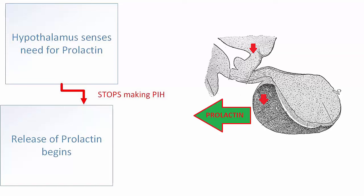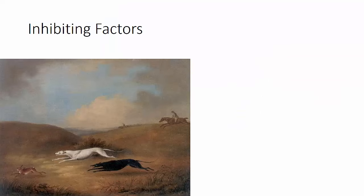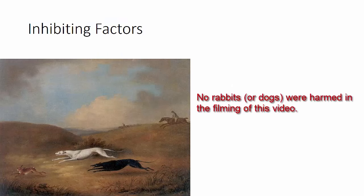One way to think about this: imagine you're with your dog and a rabbit runs by. Your dog takes off, but you've got the dog on a lead — you're holding it back, inhibiting it from chasing the rabbit. If you let go of the lead, your dog is gone and begins to chase the rabbit. That's how prolactin inhibitory hormone works.